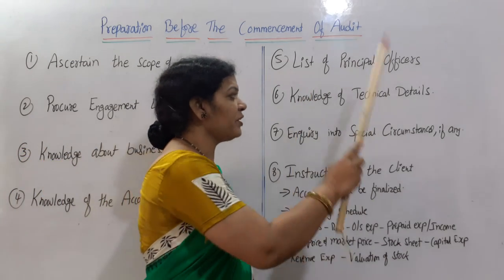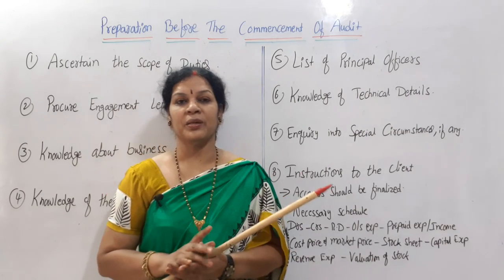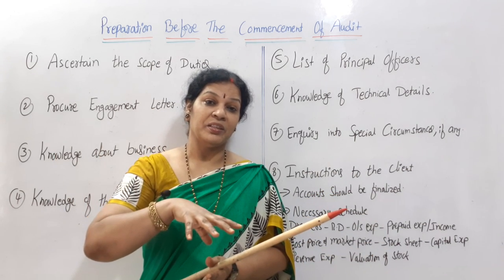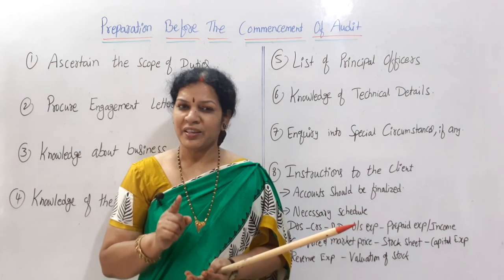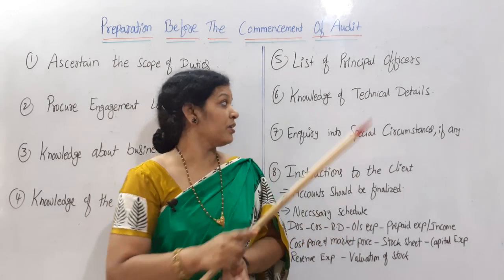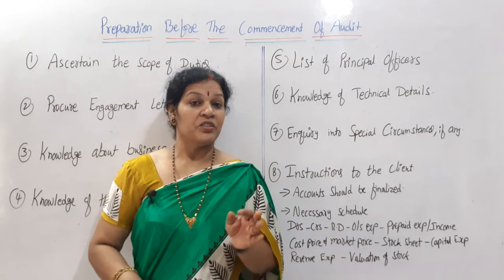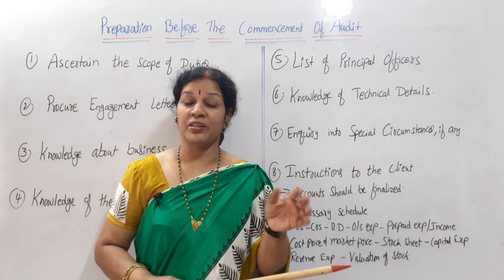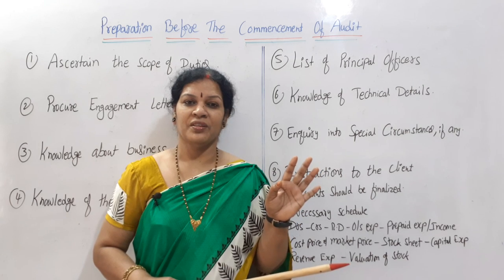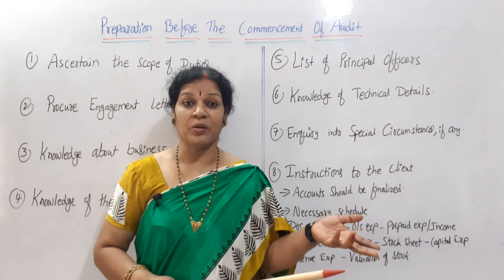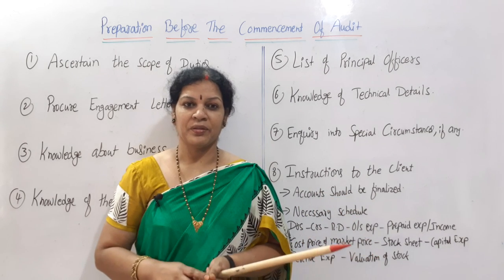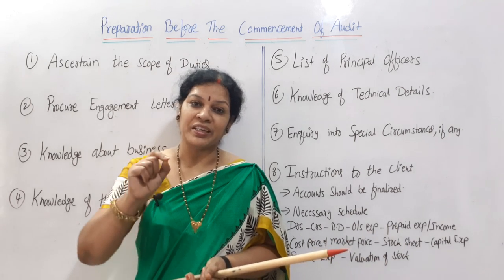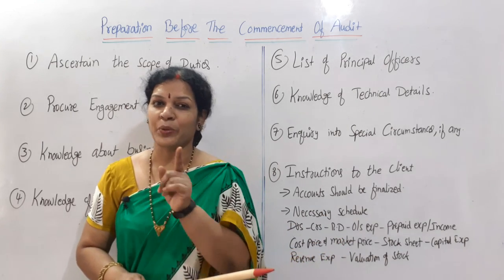The sixth step is knowledge and technical details. The auditor needs to obtain technical knowledge from the right persons in order to understand the accounts — how they are maintaining them, what entries have been made, and where the amounts are coming from. He may need to focus on specific technical aspects so that he can carry out the auditing work 100% effectively.